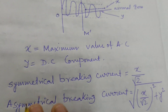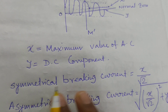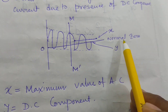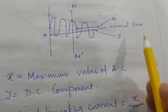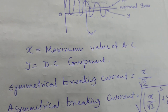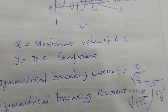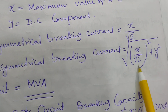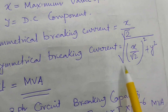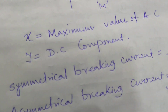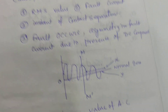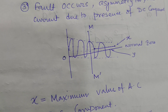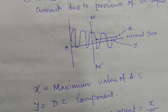The Symmetrical Breaking Current: if X is the maximum value of the AC component and D is the DC component, then Symmetrical Breaking Current equals X divided by root 2. The Asymmetrical Breaking Current equals the square root of (X/√2)² plus Y². The breaking capacity is always stated as the RMS value of the fault current at the instant of contact separation.